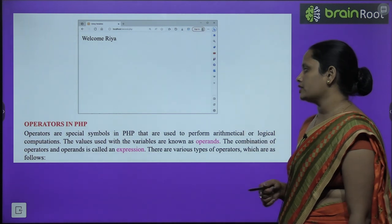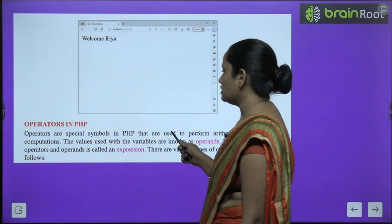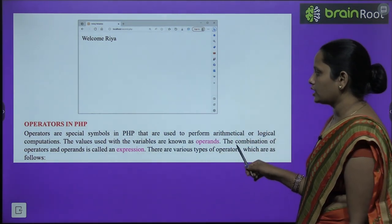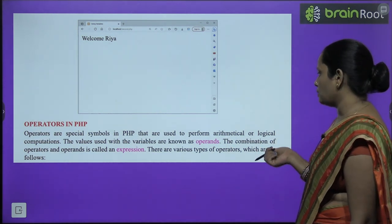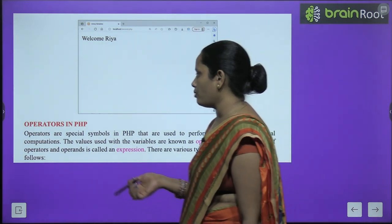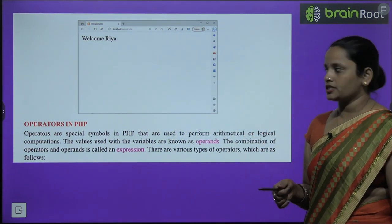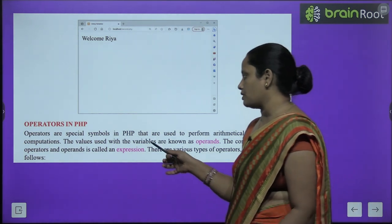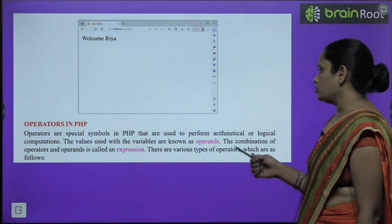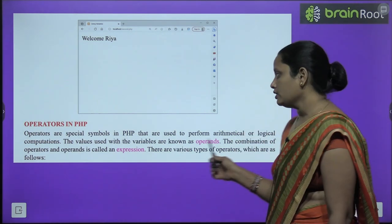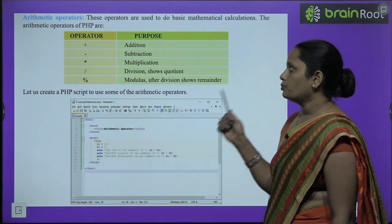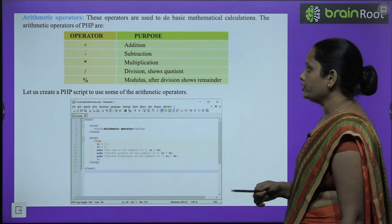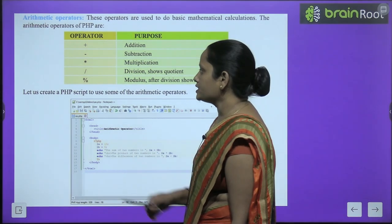Now, operators in PHP. Operators are special symbols used to perform mathematical and logical computations. The values used here are called operands. The combination of operator and operands is called an expression. There are various types of operators. The first is arithmetic operators: plus, minus, multiply, divide, and percentage sign — these are the different operators and their purposes.